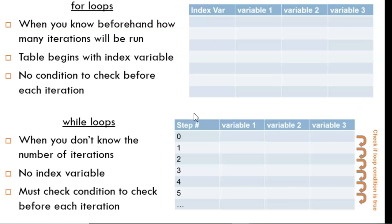Next, the leftmost column differs. With the while loop, this column keeping track of the step number is present. This is not an actual variable in the code, it simply helps us organize.